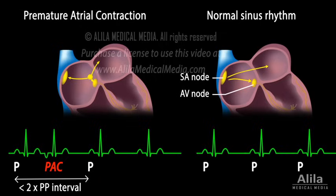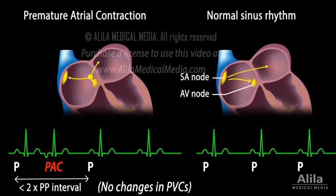This feature can be used to differentiate PACs from ectopic beats of ventricular origin, PVCs. PVCs typically do not conduct back to the atria, SA node firing is not affected, and the PP interval remains unchanged.